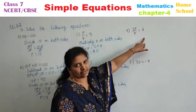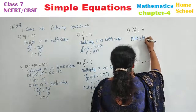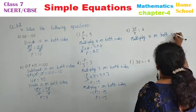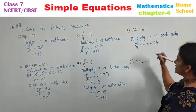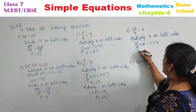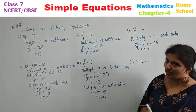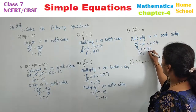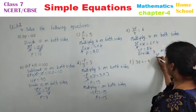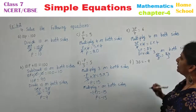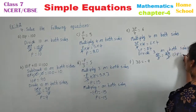Next sub-question: 3P by 4 is equal to 6. Here a number is divided, so multiply with that number. Multiply 4 on both sides. 3P by 4 into 4 is equal to 6 into 4. 4 and 4 get cancelled. 3P is equal to 24. Is that your variable value? No — again a number is multiplied, so we need to divide. Divide 3 on both sides. 3P by 3 is equal to 24 by 3. 3 and 3 cancel. 3 eights are 24. It implies P is equal to 8 is your answer.